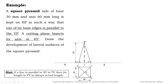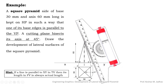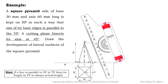Let us take slant edge OB. Using a compass, we rotate OB and make it horizontal, naming it OB1. Now OB1 is parallel to the XY line. We take its projection into the front view, connect that projected point with the apex, and O'B1' gives the actual length of the slant edge. This length is used when drawing the development of lateral surfaces. We draw a line parallel to O'B1' using this projection.